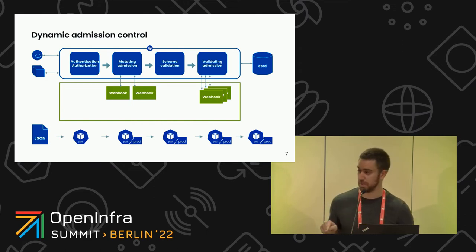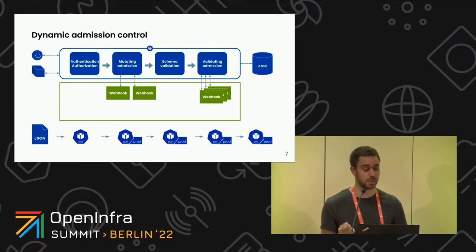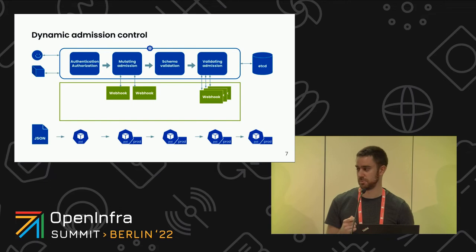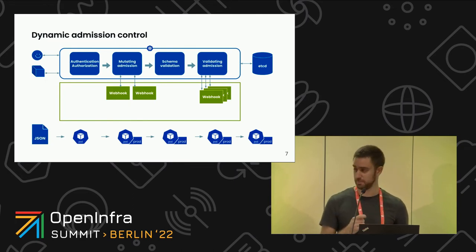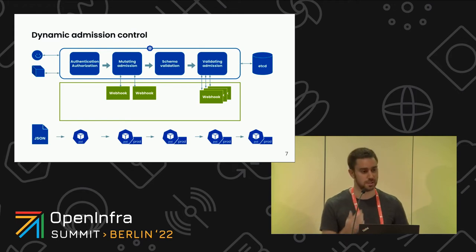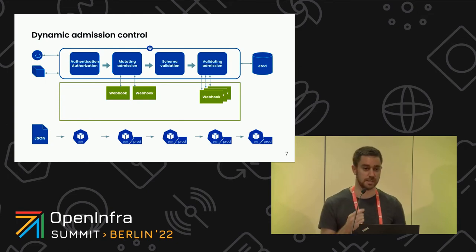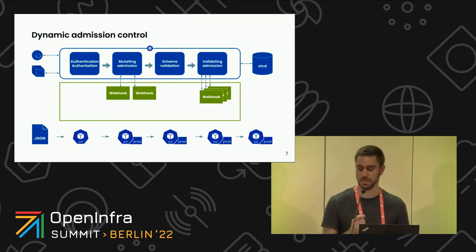These webhooks allow you to check or modify a request. For example, say we have a JSON request for a pod with one container, and we want every pod to get an annotation called 'prod'. The request goes through authentication, then the mutating admission webhook adds the annotation. Then schema validation checks the JSON, and the validating admission confirms the annotation is correct. If everything checks out, the request goes to etcd and the pod is in the cluster.